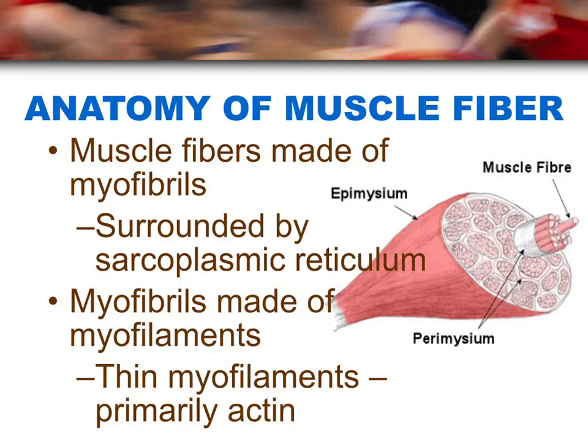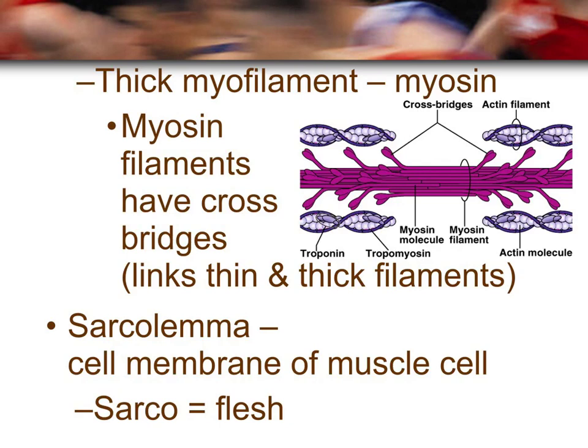Myofibrils are further made up of smaller structures called myofilaments, and there are two types. The thinner myofilament is made up of a protein called actin, and the thick myofilament has the protein myosin. You can remember which is which by the length of the word: actin is the shorter word, so it's the thin filament; myosin is a bigger word, so it's the thicker filament.